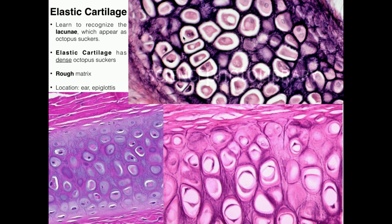The better way to tell the difference between elastic and hyaline is that in elastic cartilage, this matrix outside of the lacunae — every space here that's not occupied by lacunae — is very rough looking in appearance. Even if you look down here, you can tell it looks like there are a lot of scratch marks. So in elastic cartilage, the matrix is a lot rougher.